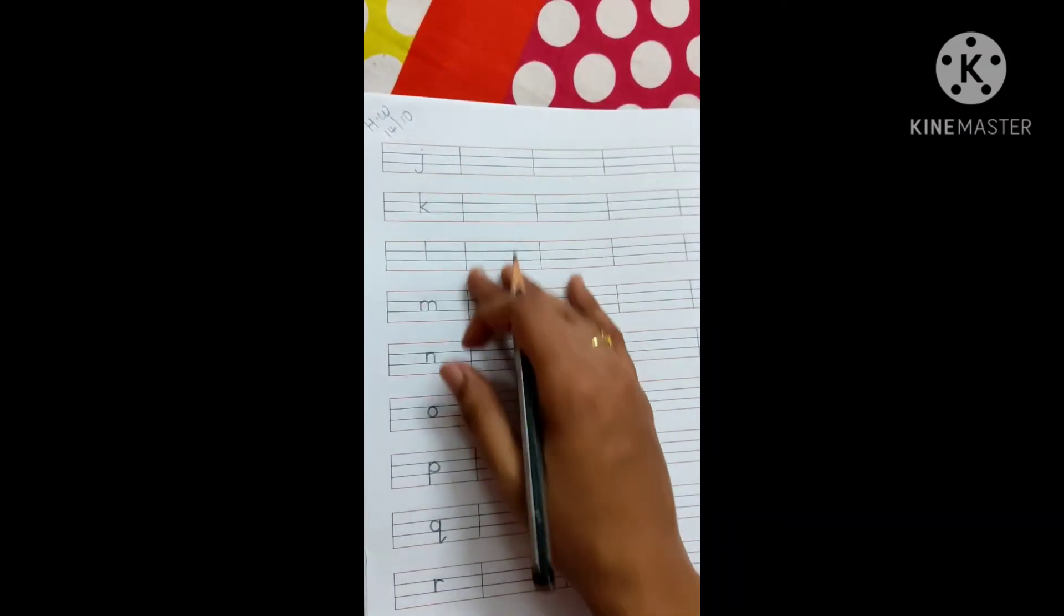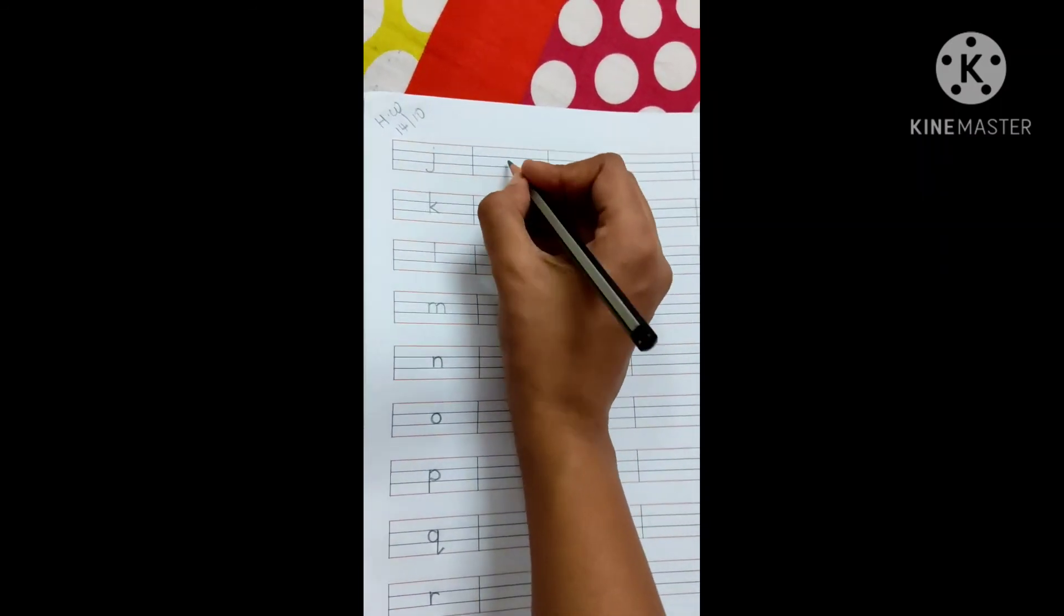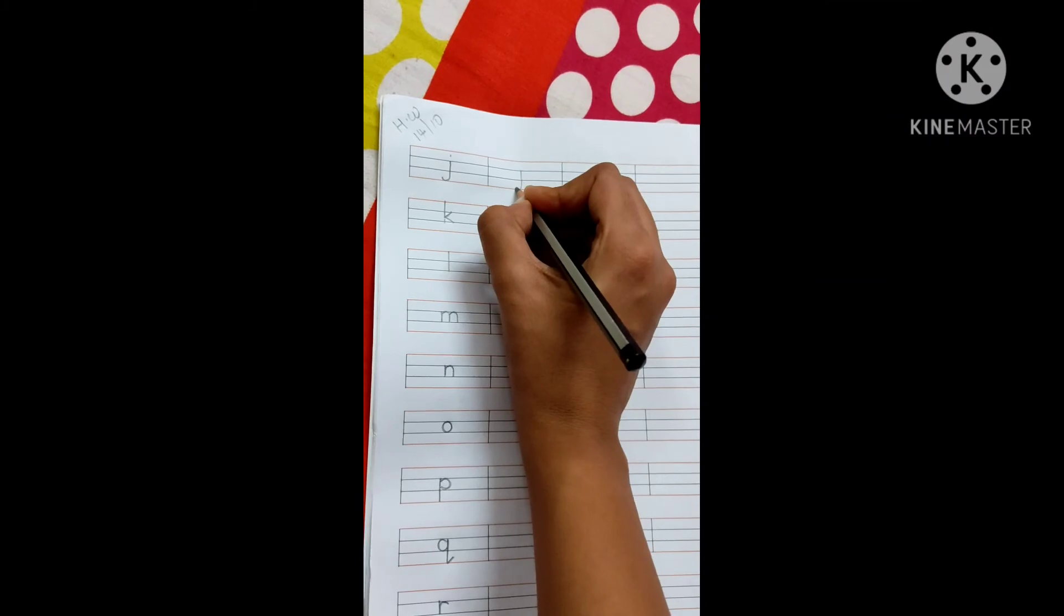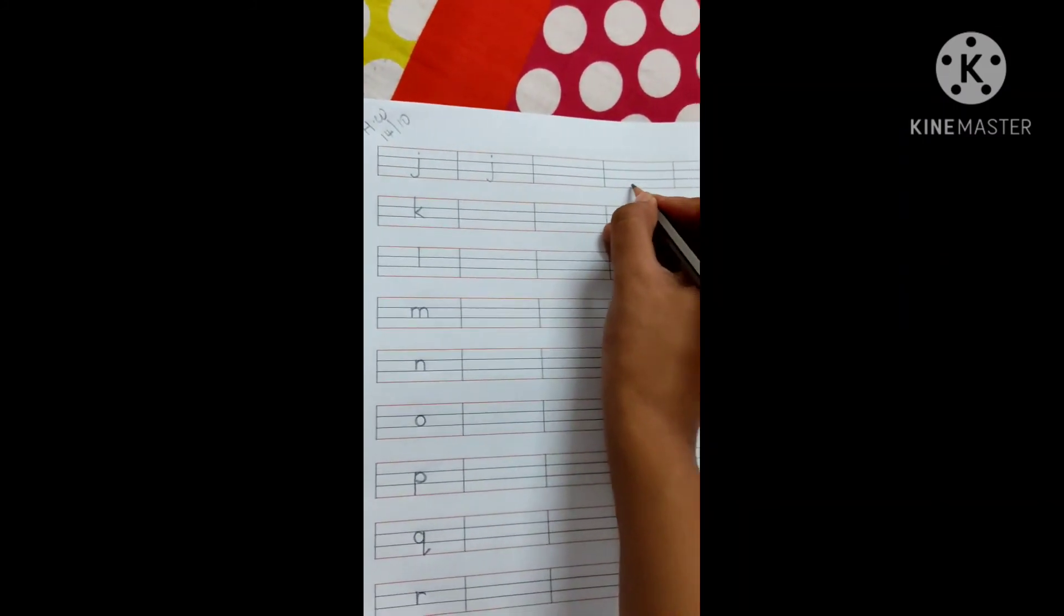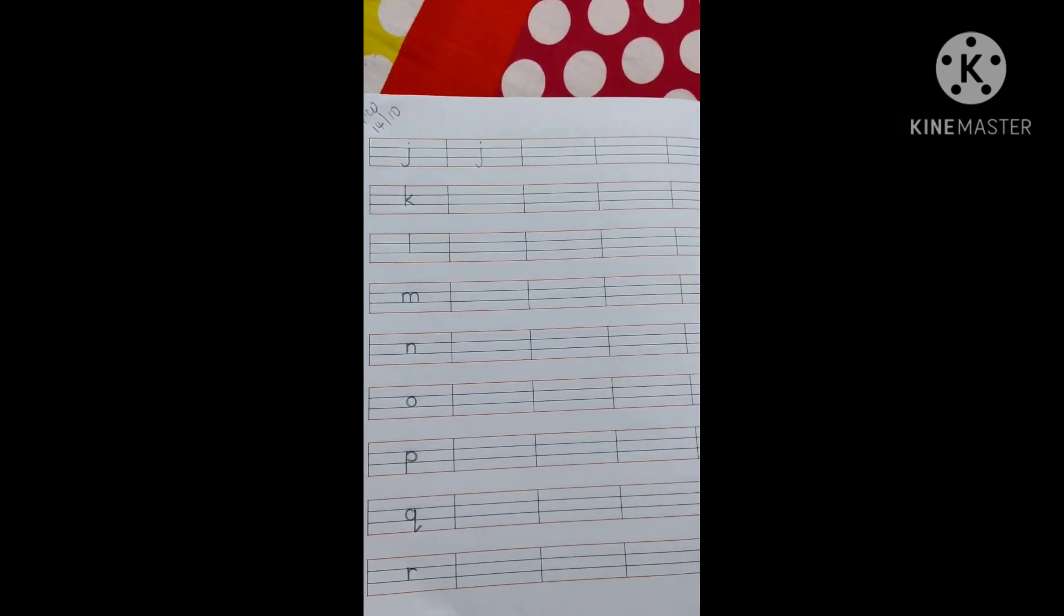Like this, first, you will trace and then here, you are going to write the same. Like J, then you will write here also. J, K, L, M, N, O, P, Q, R. This is your small letter practice.